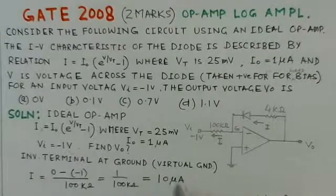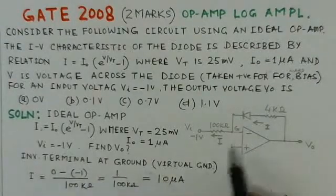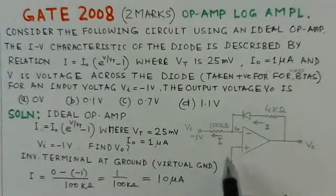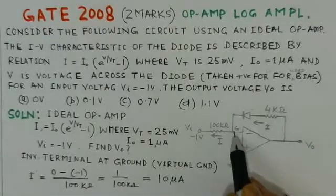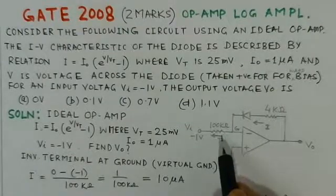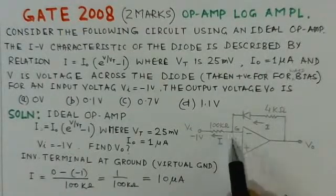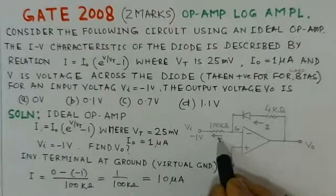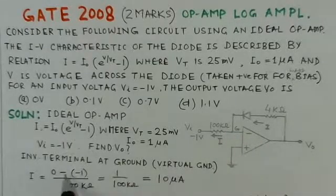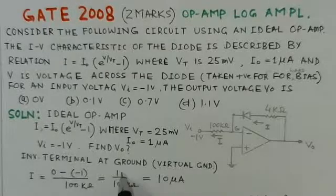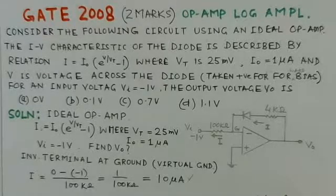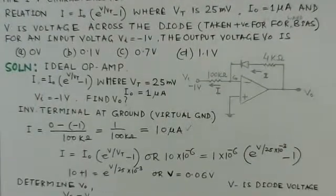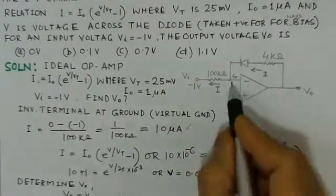Since the inverting terminal is at ground potential due to virtual ground, we can find the current through this circuit. The current direction is shown: it equals 0 minus (minus 1 volt) divided by 100 kilo-ohms, which gives 1 over 100k, coming out to be 10 micro amperes. This is the current I flowing through the circuit.